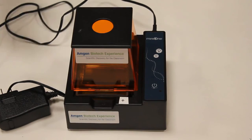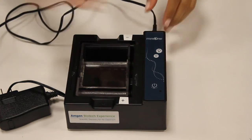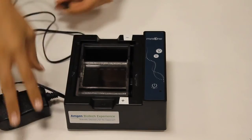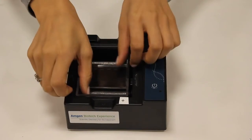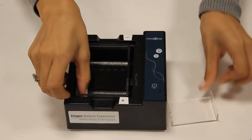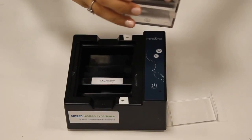Once finished using the gel box, rinse the tank with DI water and place it upside down to dry.